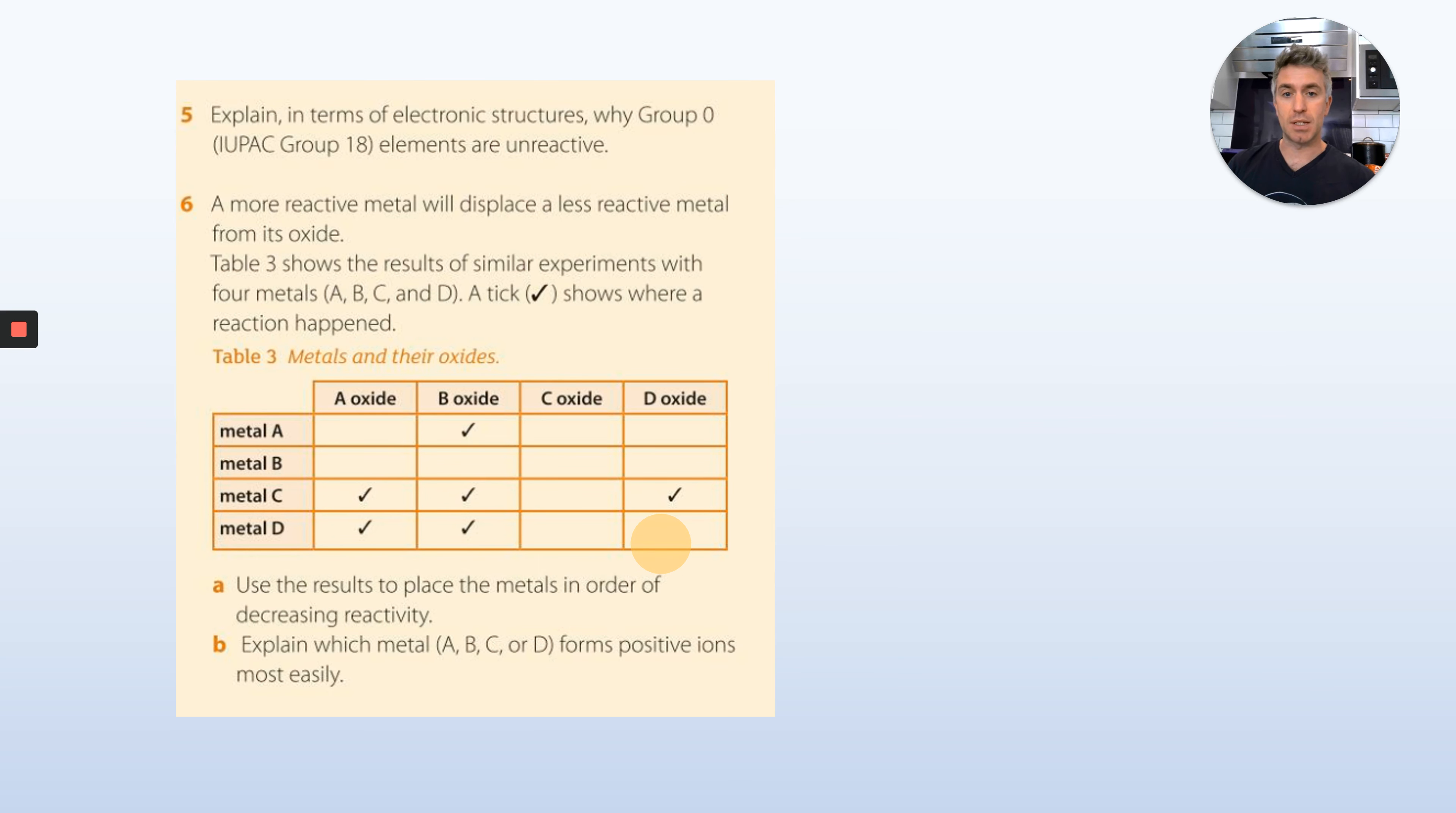Number five, we definitely did this in the lesson. Explain in terms of electronic structure why Group 0 elements are unreactive.